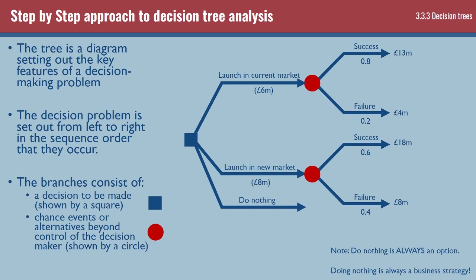Where we've got success and failure, we've got numbers underneath. So 0.8 and 0.2 represent the probability of those two outcomes - 0.8 means an 80% chance of success, 0.2 means a 20% chance of failure. For the new market we've got a 60% chance of success and a 40% chance of failure. Those probabilities would be given to you in an exam - if they give you one you can work out the other because they have to add up to 1.